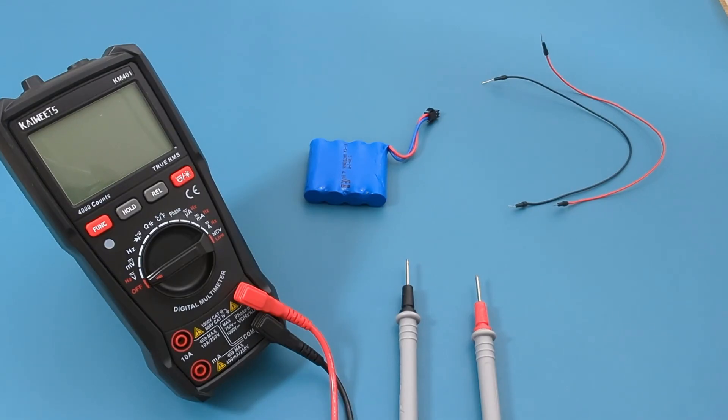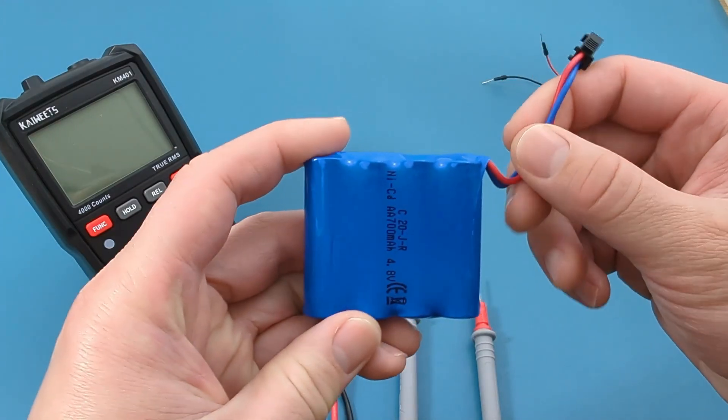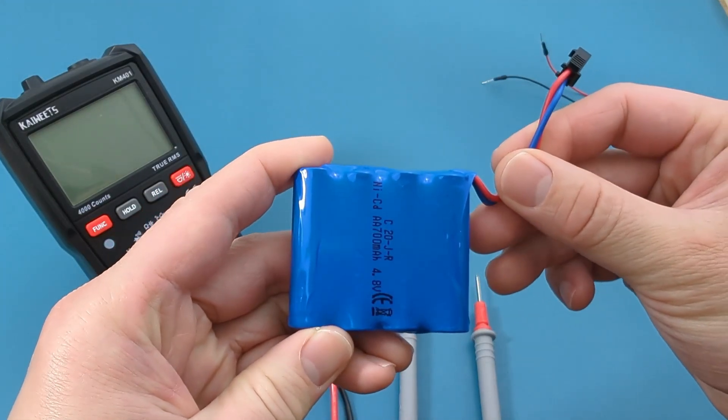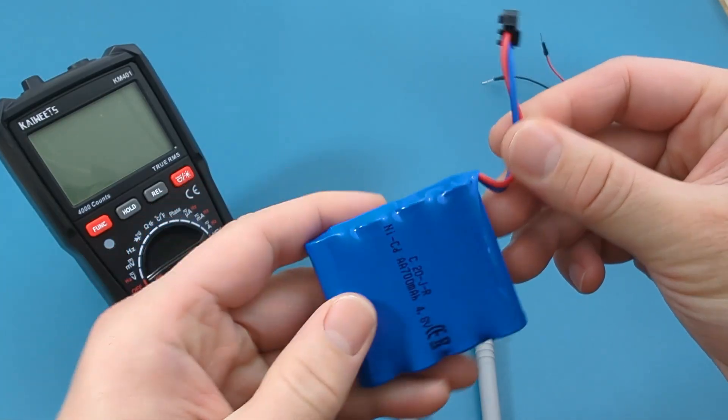This rechargeable battery is used to power an RC car. This battery pack consists of four rechargeable batteries connected to a plug. It has a combined capacity of 4.8 volts.